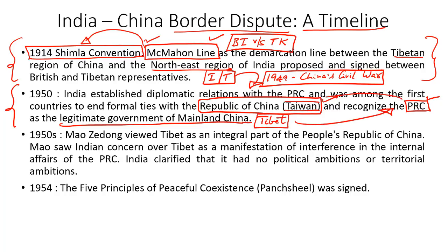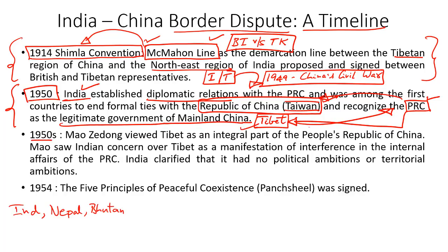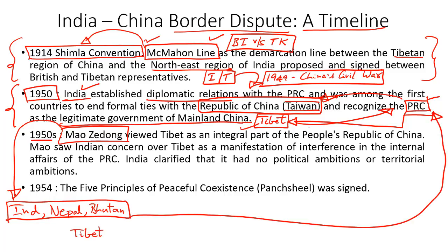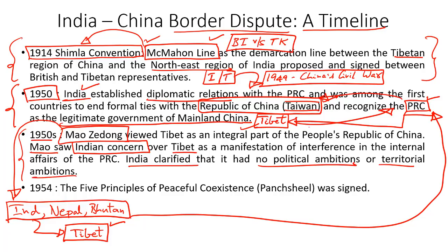Since the 1950s, China has rejected the validity of the McMohan line and repeatedly claimed the entire state of Arunachal Pradesh, even referring to it as southern Tibet. China is particularly interested in Tawang in Arunachal Pradesh, located close to the Tibet border, mainly because Tawang is home to important Buddhist monasteries with close connections to Tibetan monasteries. This was an overview of the border dispute between India and China.